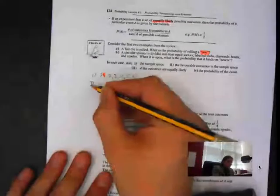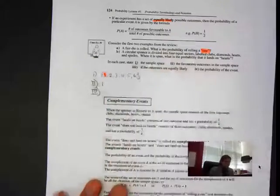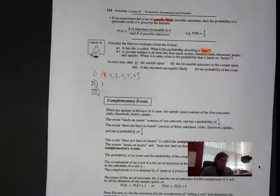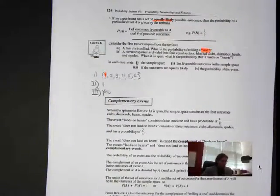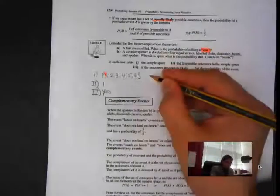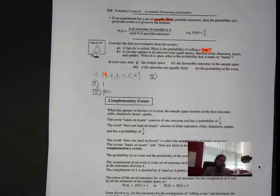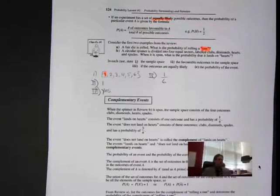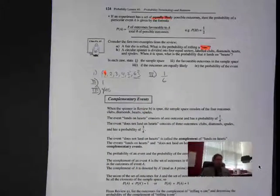Part two — what is my favorable outcome? It's only a one, the highlighted number. Part three — are the outcomes equally likely? Is it equally likely that I get a one or a two? Yes, they are all equally likely. Part four — what is the probability of the event? My probability is one out of six, because I have one favorable outcome out of a total of six.